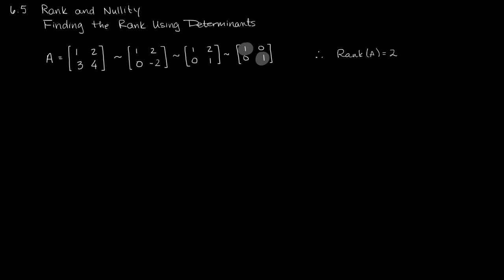Now let's take a look at another way to get this information. It's overkill in an example like this, but there will be times when it's really handy to find the rank a different way. I'm going to take the determinant of A. This is a 2 by 2 matrix, so that's straightforward — it's just 4 minus 6, and that's negative 2. The relevance of this negative 2 is that it's not 0. We've found that the determinant of this 2 by 2 matrix is not 0, and therefore the rank of this matrix is the same as its dimension.